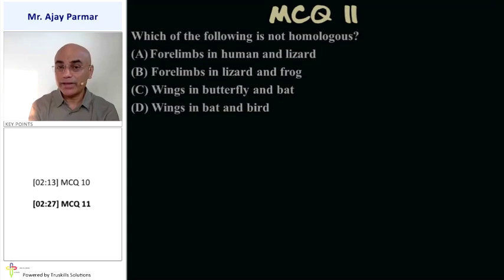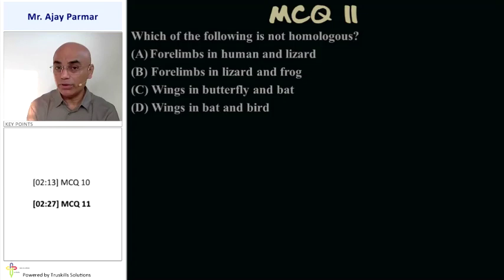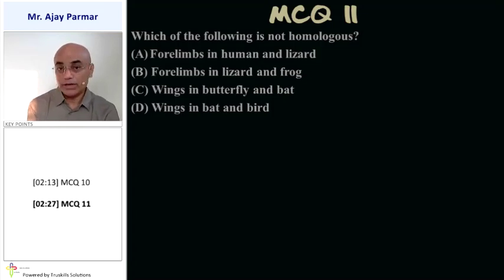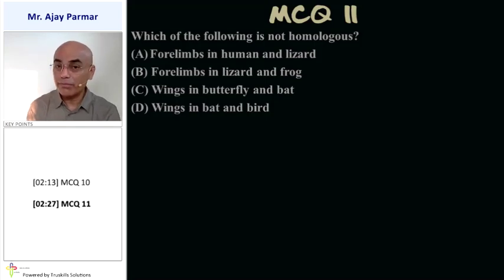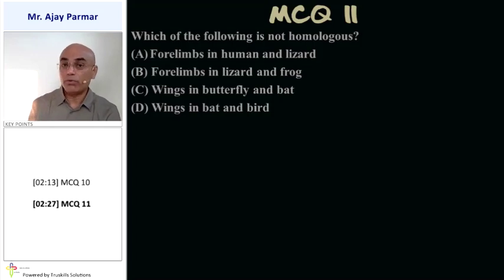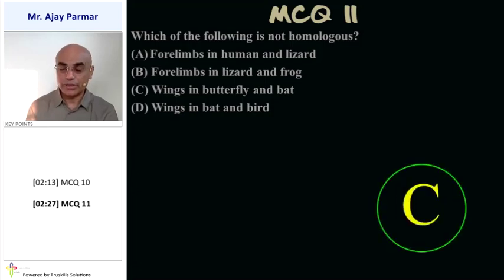Which of the following is not homologous? Four limbs of human and lizard? No, they are homologous — same structural plan. Four limbs of lizard and frog? That is also the same structural plan, so that is also homologous. But wings of the butterfly, which are ectodermal extensions, and wings of a bat, which are completely modified forelimbs — those are not homologous. That is why option C is the correct answer.